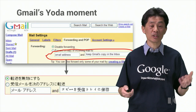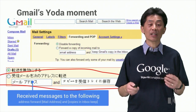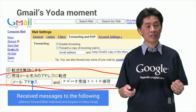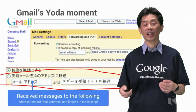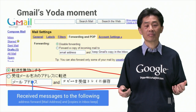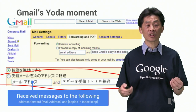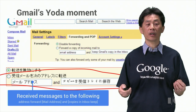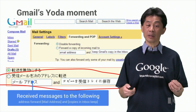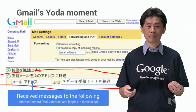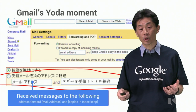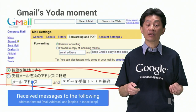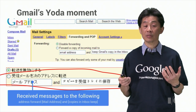Then we translated it to Japanese. That translation had the correct meaning, but sounded like a Japanese Yoda — something like: 'receive messages to the following address, forward, mail address, and copies in inbox, keep.' Because word order can be very different for languages, a cardinal rule is to never concatenate phrases.